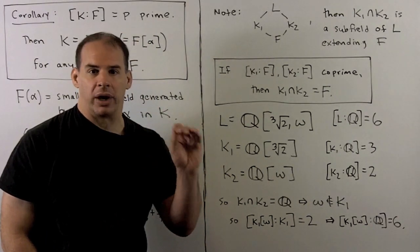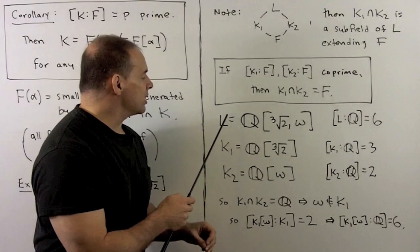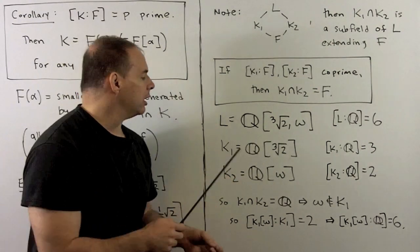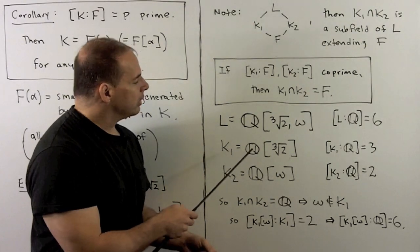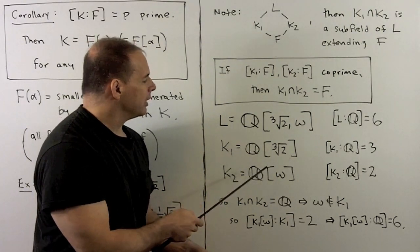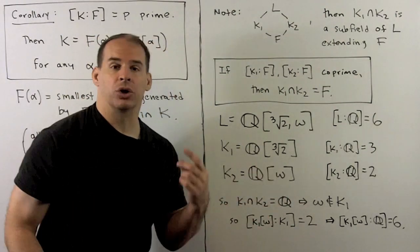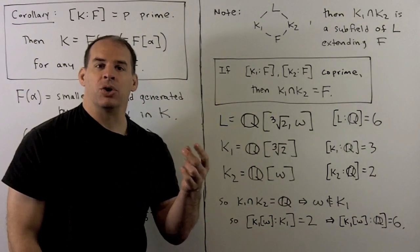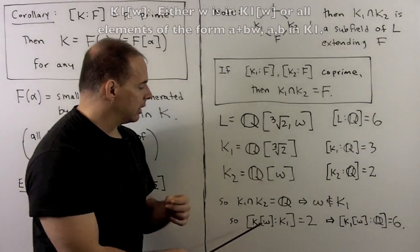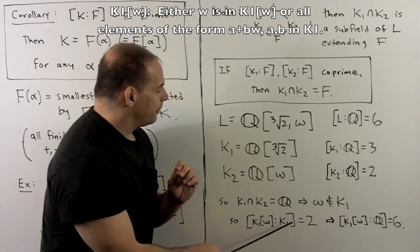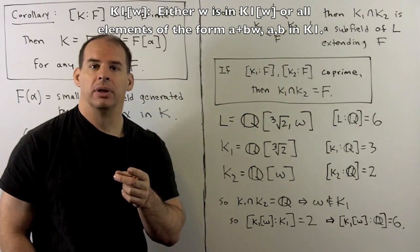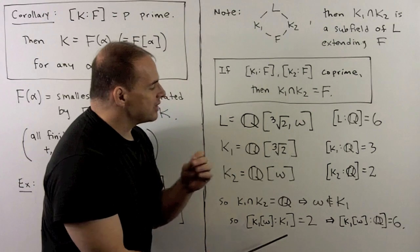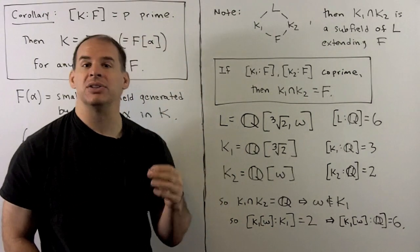We can use this to be precise about how we adjoin elements. Consider L = Q adjoin ∛2 and ω. We have intermediate fields K₁ = Q(∛2) and K₂ = Q(ω), with degrees 3 and 2 respectively, which are co-prime. So K₁ ∩ K₂ = Q, meaning ω is not in K₁ and we can adjoin it. The degree [K₁(ω):K₁] must be 1 or 2; since ω is not in K₁, it equals 2. By the degree formula, [K₁(ω):Q] = 6.